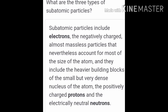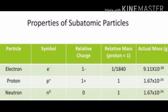These are the subatomic particles, which include electrons, which are negatively charged and almost massless particles that nevertheless account for most of the size of the atom. They include the heavier building blocks of the small but very dense nucleus of the atom. The positively charged protons and the electrically neutral neutrons are found inside the nucleus, and electrons move around the nucleus in their fixed orbits.